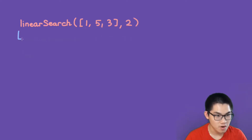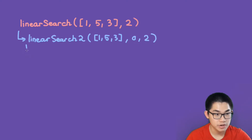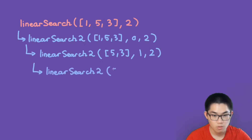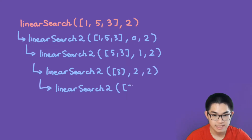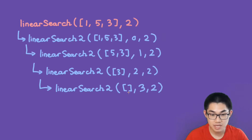What if the number we're searching for is not in the list? We call linear search two, pass in the same list, have index zero, and the target stays the same. We recurse, move to the next number, increment zero to one. We recurse again, move to the next number, increment the index. We recurse again and the list becomes empty. Since we cannot find the number, once the list is empty we return negative one, indicating it is not in the list.